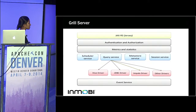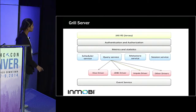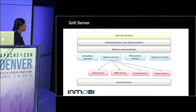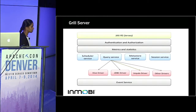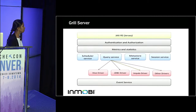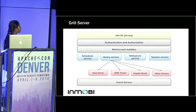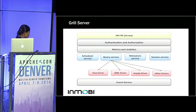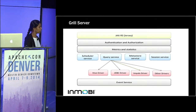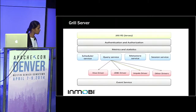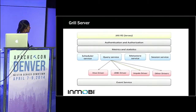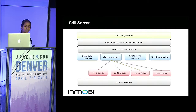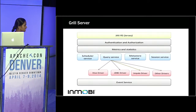The Grill server provides a JAX-RS Jersey REST API for users. It has a scheduler service where you can schedule queries, a query service where you can submit queries, fetch status, and fetch results, a metastore service to browse the metastore, and a session service which gives the shell experience — you open a session, set your configuration, and set your DB. It has a Hive driver, JDBC driver, and Impala driver for now. It also has an event service to send events across these services.